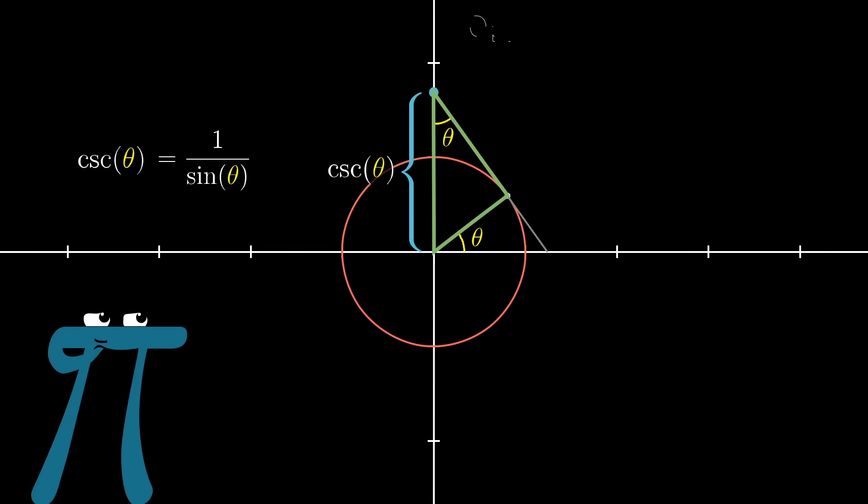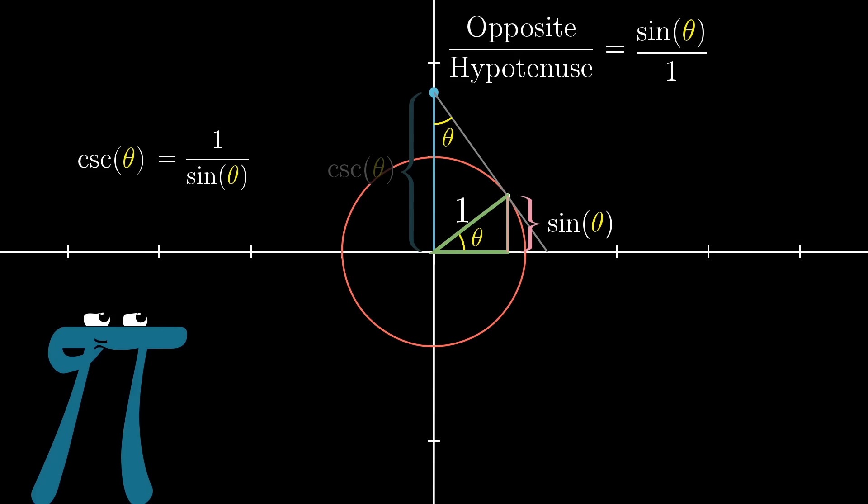For each one of those triangles, I want you to think about the ratio of the length of the side opposite theta to the length of the hypotenuse. For the small triangle, the length of the opposite side is sine of theta, and the hypotenuse is that radius, the one that we defined to have length 1, so the ratio is just sine of theta divided by 1.